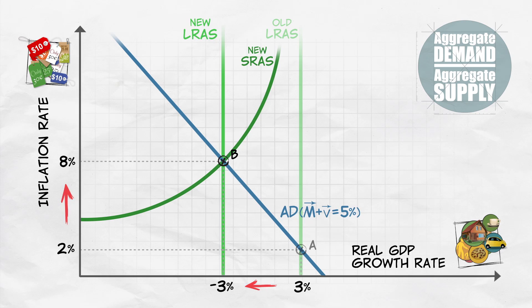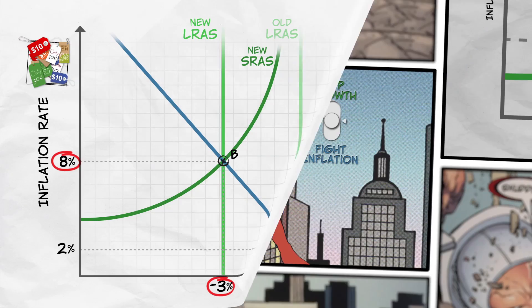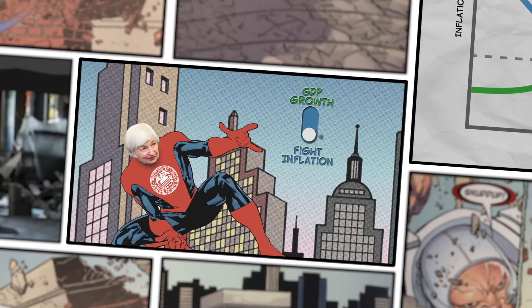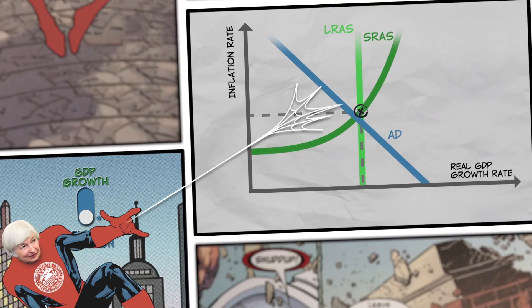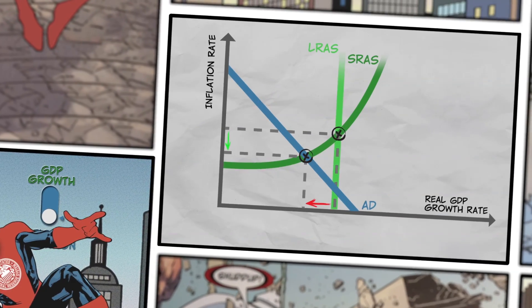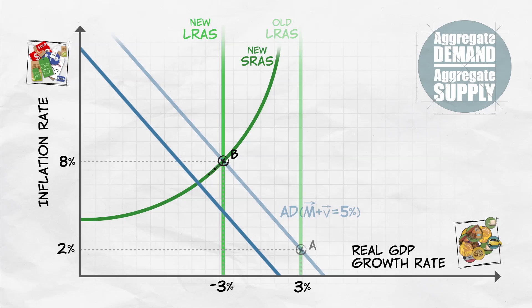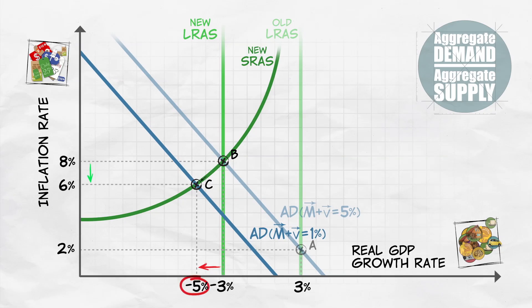Unfortunately, combating these two issues — sluggish growth and high inflation — requires opposite actions. To decrease inflation, the Fed would have to decrease the money supply and reduce aggregate demand, which will reduce the growth rate even further.